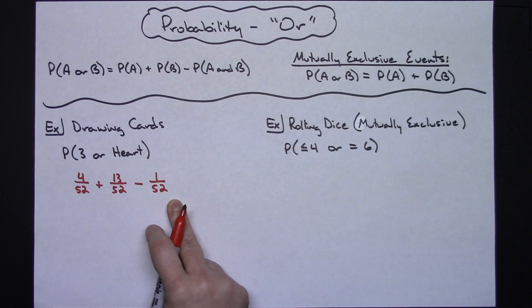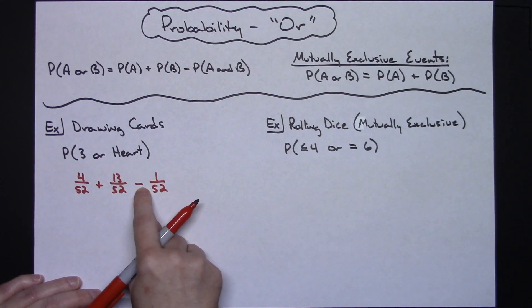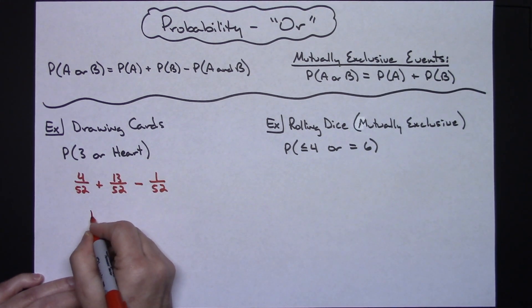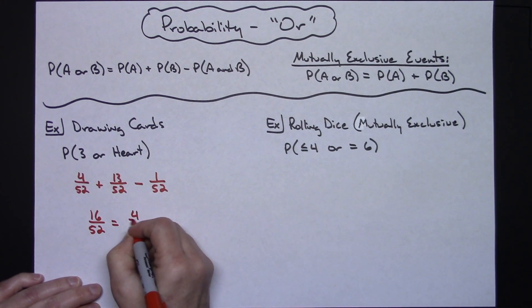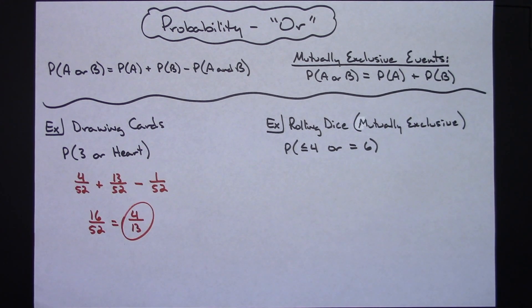And then at this point it would just be a matter of going ahead and probably grabbing your calculator, doing it in your head either way. Four plus thirteen minus one, that's going to give me sixteen over fifty two and if I reduce to lowest terms that will be four over thirteen. So a straightforward use of that right there.